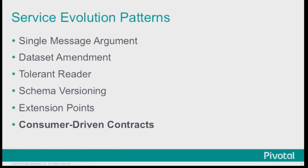You can have tolerant readers — be flexible in what you receive and strict in what you send. You could try schema versioning: version one, version two, version five, version six. You can try extension points like user-defined extension field number one, user-defined extension field number two. Who's seen all of those things? These are all things you're fairly familiar with, but I don't want to talk about those ones.